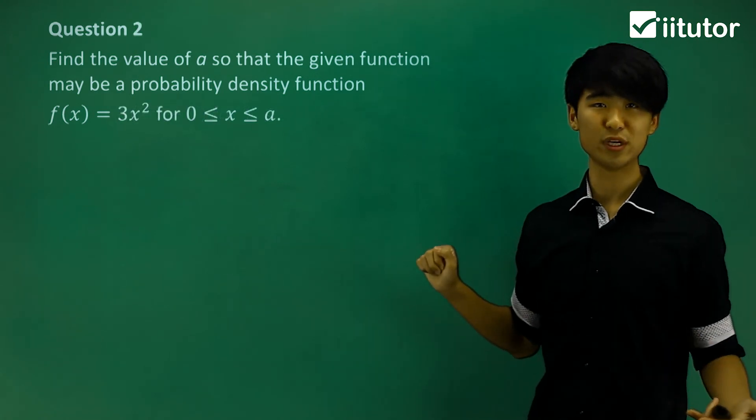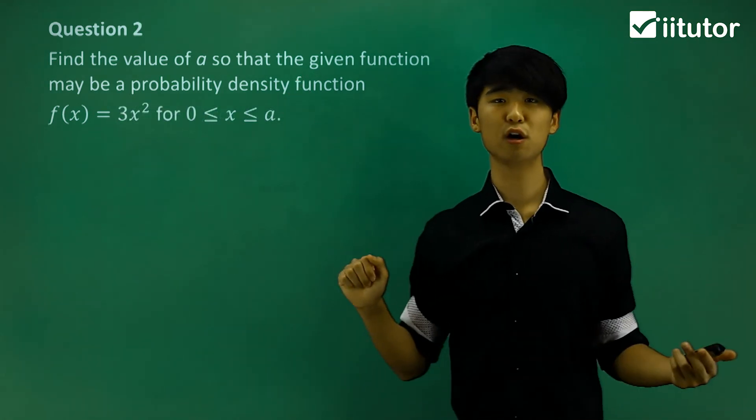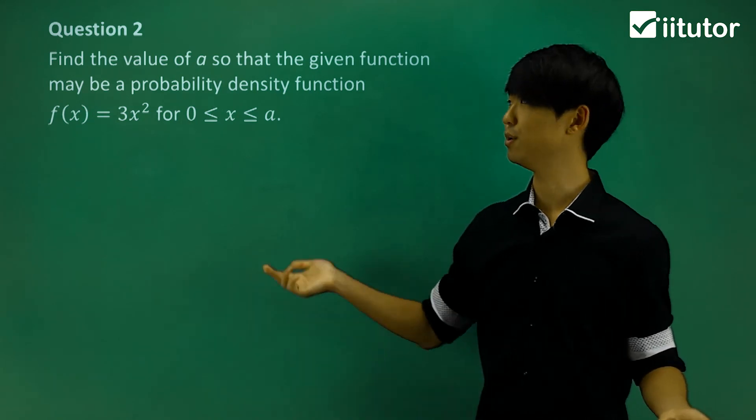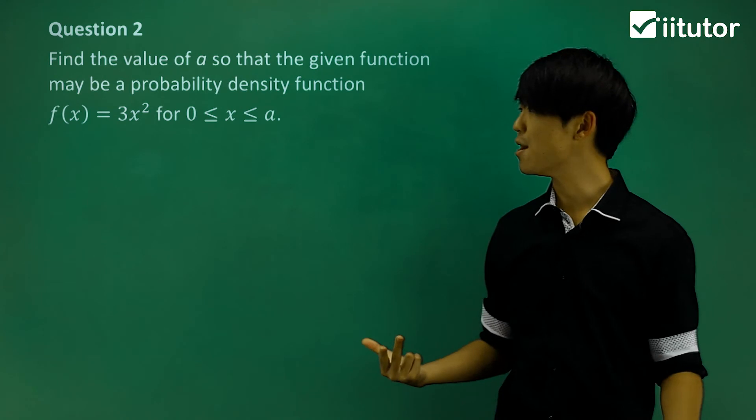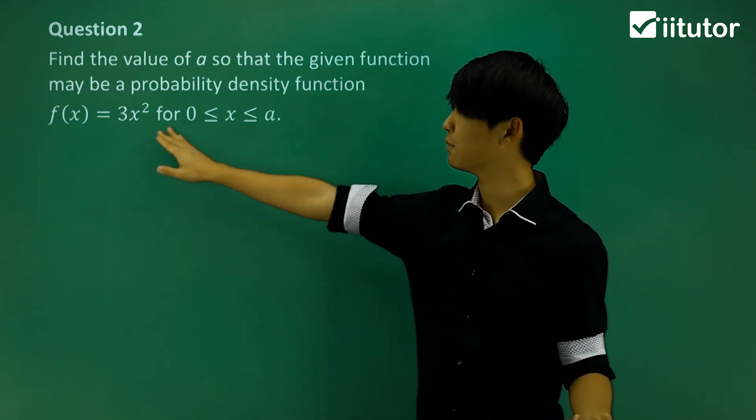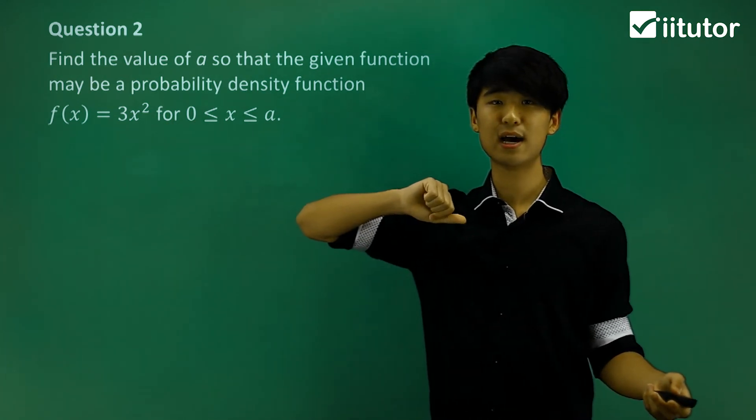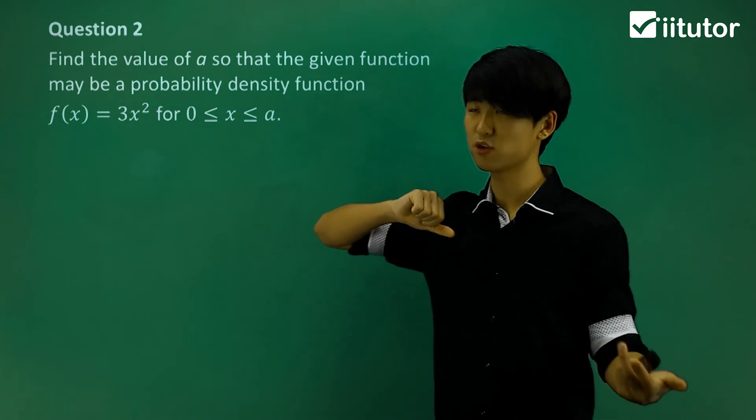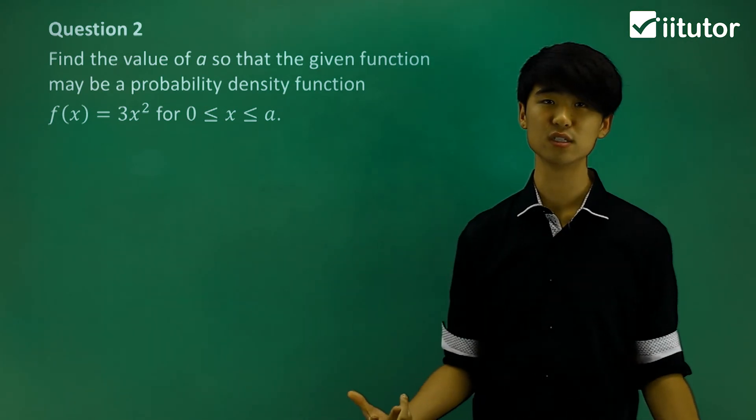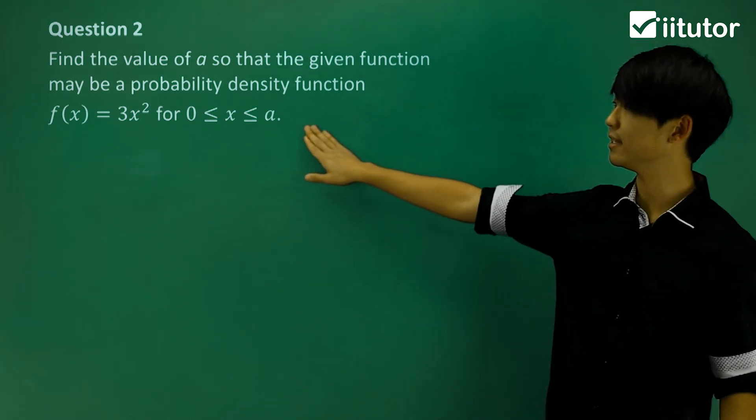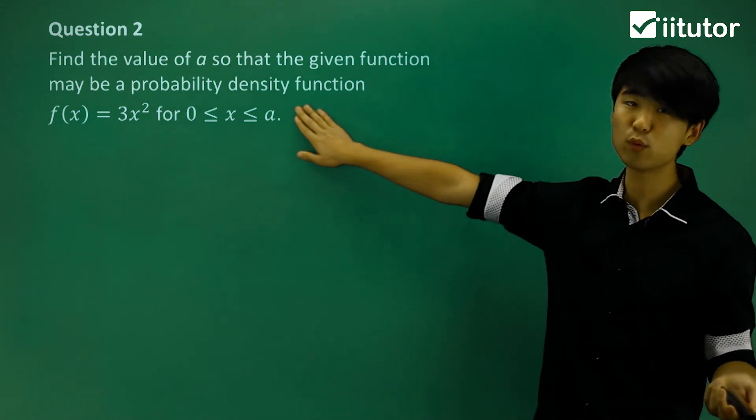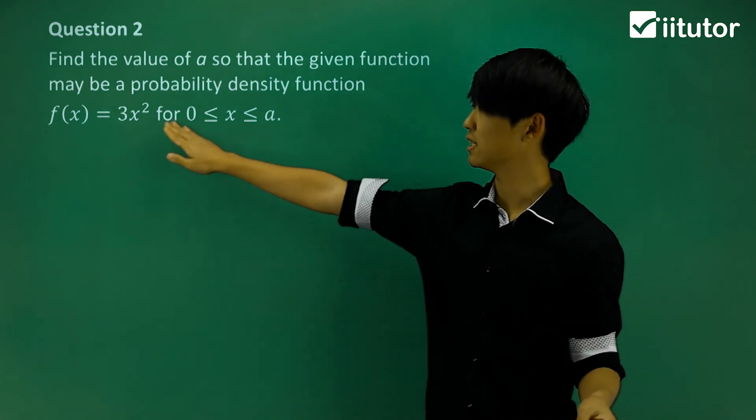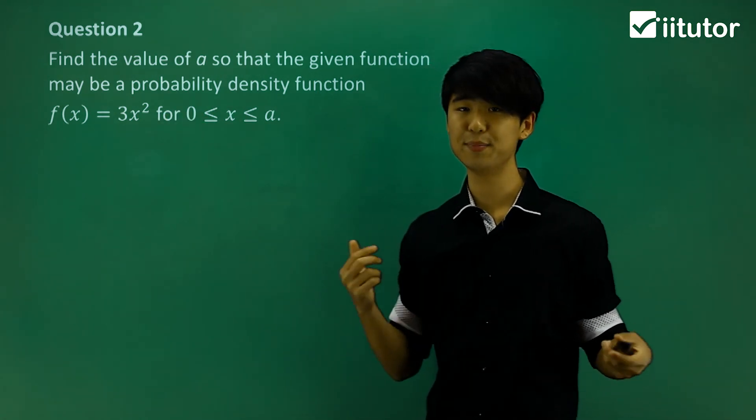If we move on to question 2, it's a very similar sort of question. We're finding the value of a, not a pronumeral, we're finding the value of a, so that the given function may be a PDF. Now my function in this case is fx is equal to 3x squared. So that's my function, but my domain is not quite defined. It's between 0 and a. And we're going to find what a is, so we're going to have a set domain so that this can be a PDF.